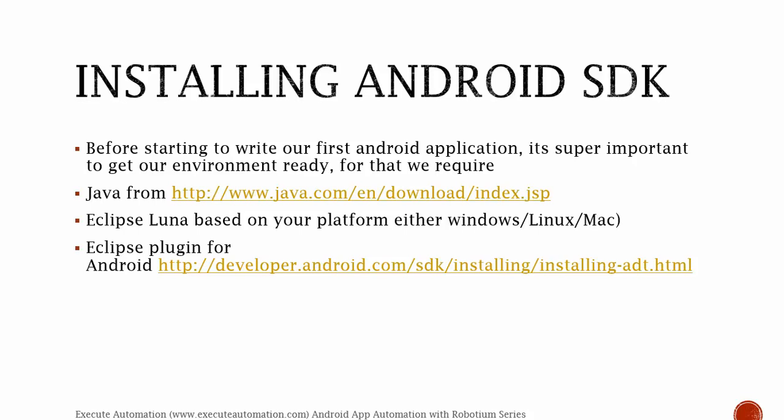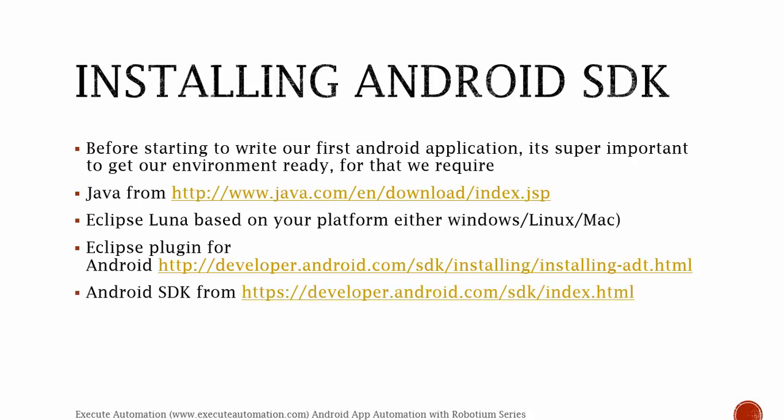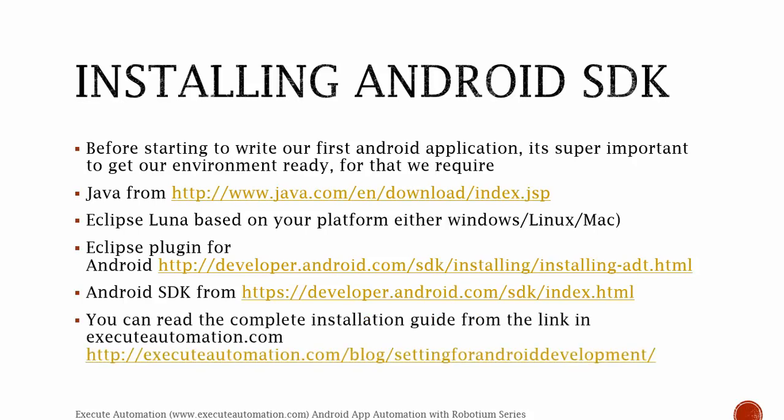You can download the Eclipse plugin from the link shown here. We also require the Android SDK. The SDK is a software development kit provided by Google to develop Android applications. Without the SDK we cannot develop anything on Android — it exposes all the APIs to write code on Android. You can read the complete installation guide from the link on xeerautomation.com.